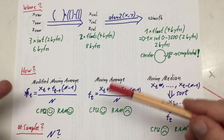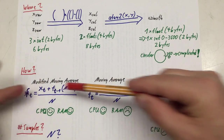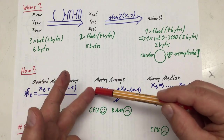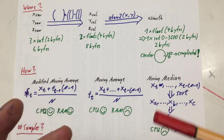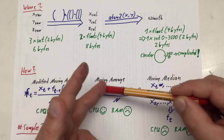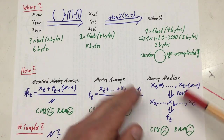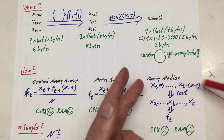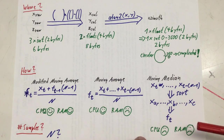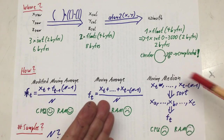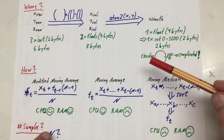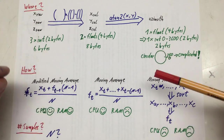A modified moving average is easy on CPU and RAM — no buffering needed, just simple operations. A moving average needs to store all N samples but is still CPU-efficient with optimizations. A moving median is the heaviest: you store all N samples and must sort them to find the center value. Finally, you have to decide over how many samples you want to filter.